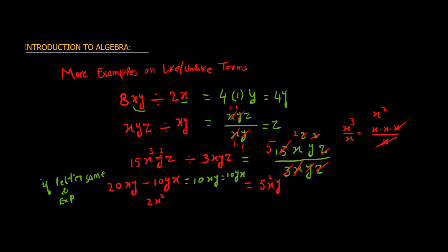Another example: 2x² minus 3x. This is a subtraction operation. These are unlike terms — x squared and x are different — so they cannot be simplified. The answer stays as 2x² minus 3x; no further simplification is possible.